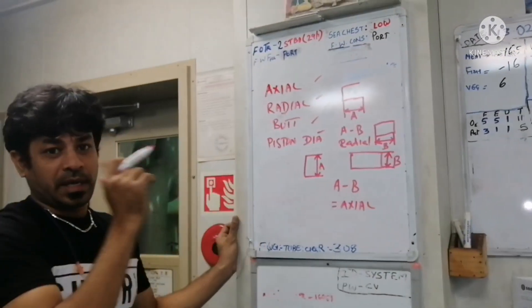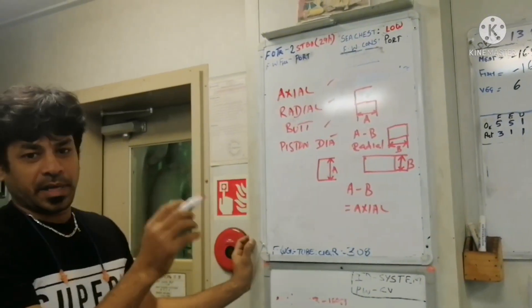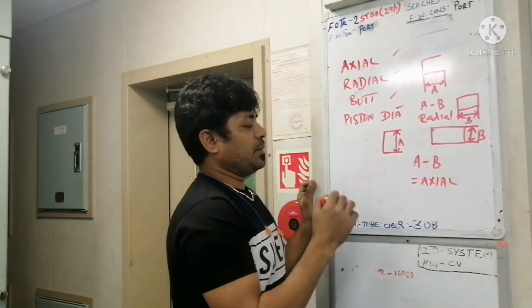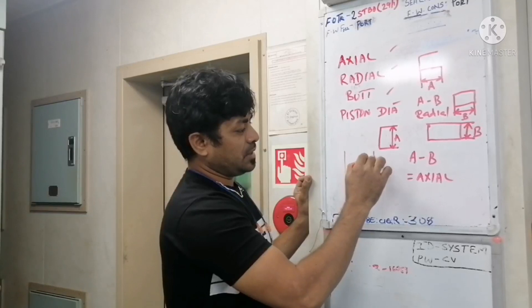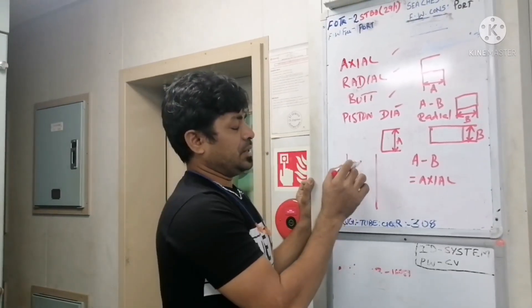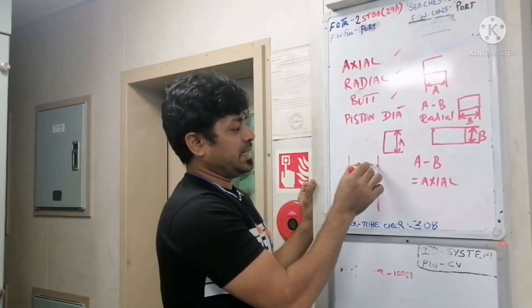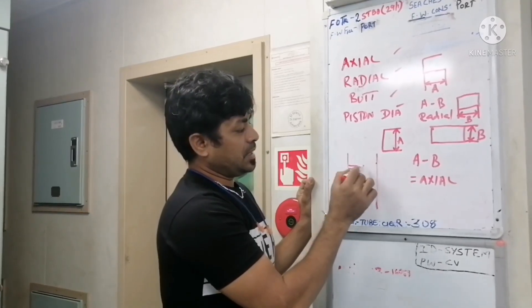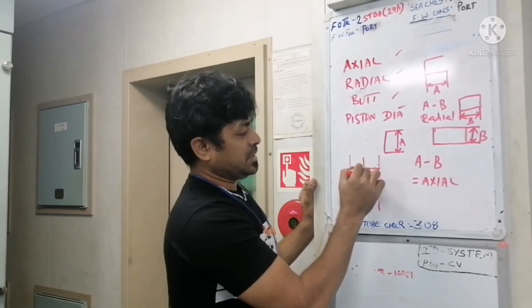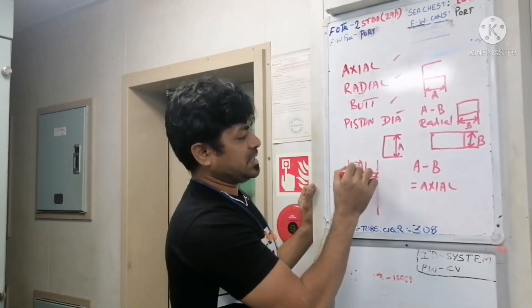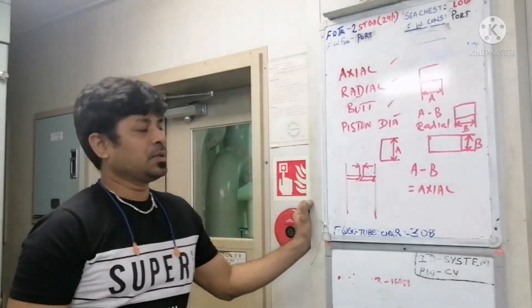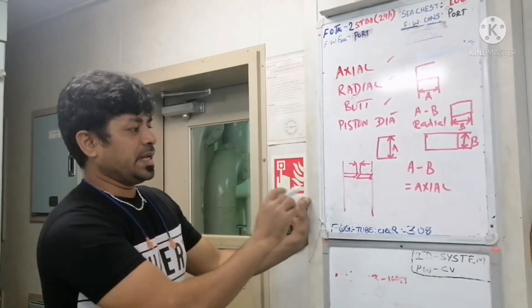Apart from axial and radial, we also need to take the butt clearance. You insert the piston ring inside the cylinder liner and check the gap at the ring ends. The distance between the ring gap is what we call butt clearance.